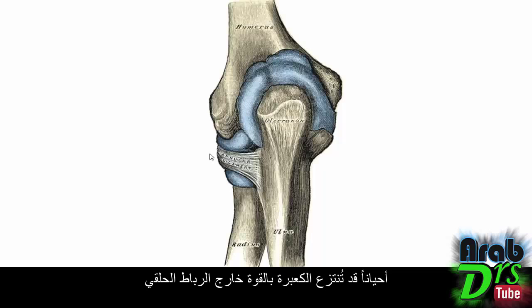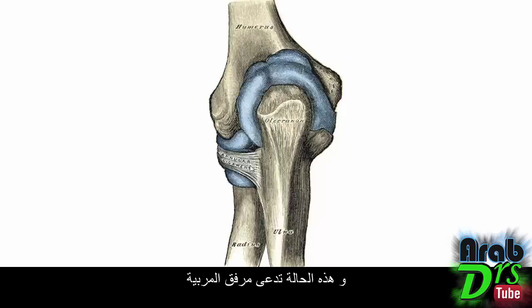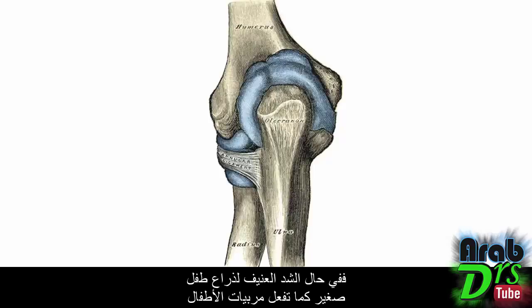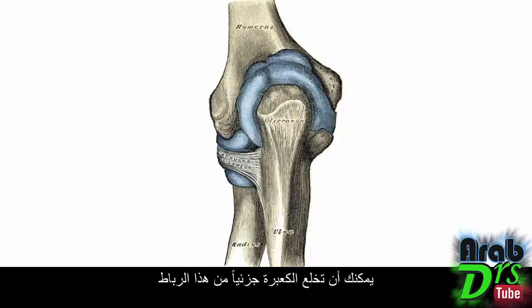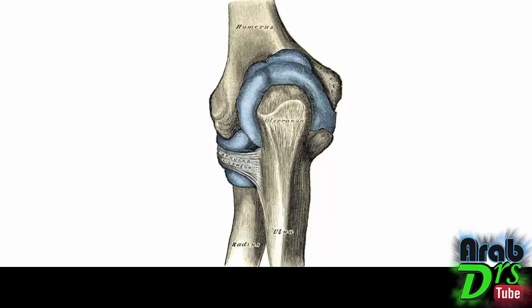Sometimes the radius can get forced out of this annular ligament, which is called radial head subluxation. This is known as nursemaid's elbow because if you forcefully pull on the arm of a young child, as a nursemaid might do, you can sublux the radius from this ligament. This is more common in young children under the age of five.